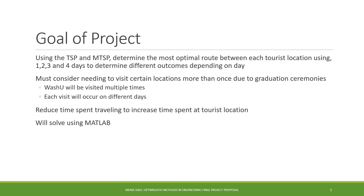The goal of the project is to use TSP and MTSP to determine the most optimal route between each location using a possible one, two, three, or four days of desired travel days. The problem must also consider the need to visit WashU on multiple days as predetermined by the graduation schedule. The goal is to optimize the amount of time traveling and find the shortest route possible from location to location.